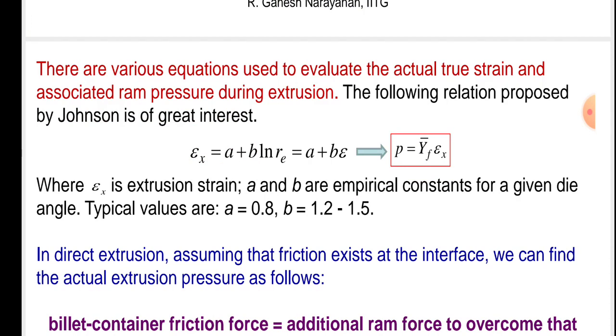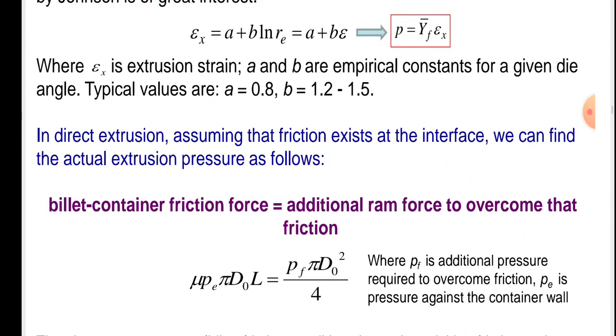In direct extrusion, assuming that friction exists at the interface, we can find the actual extrusion pressure as follows. Billet container friction force equals additional RAM force to overcome that friction.